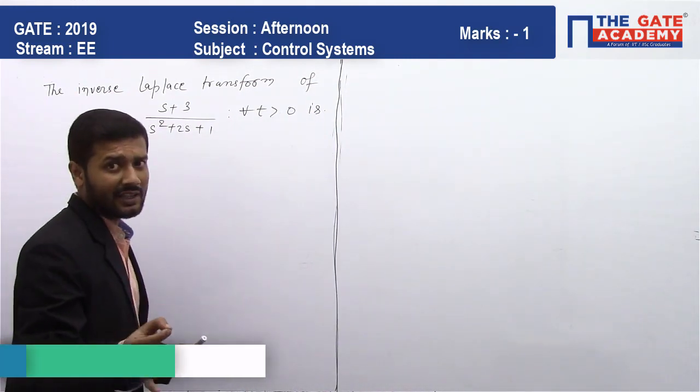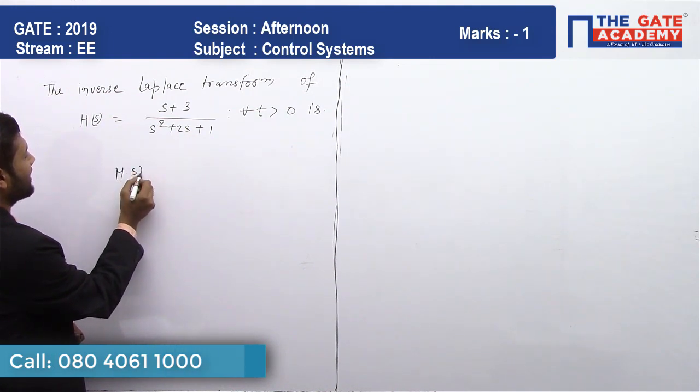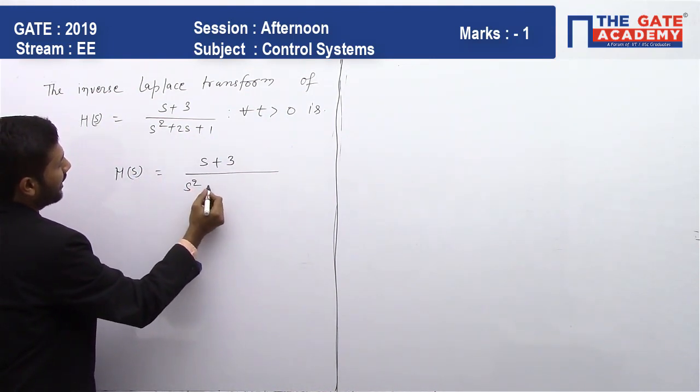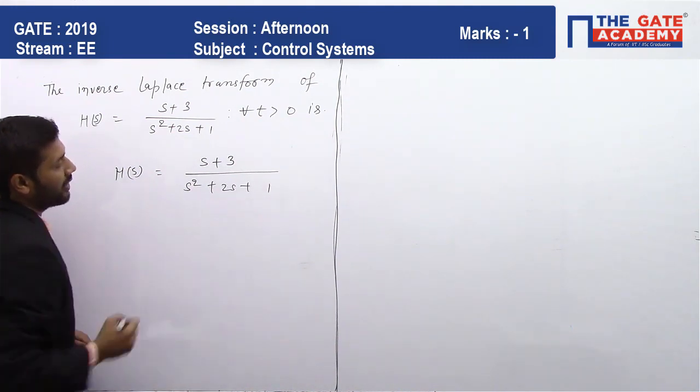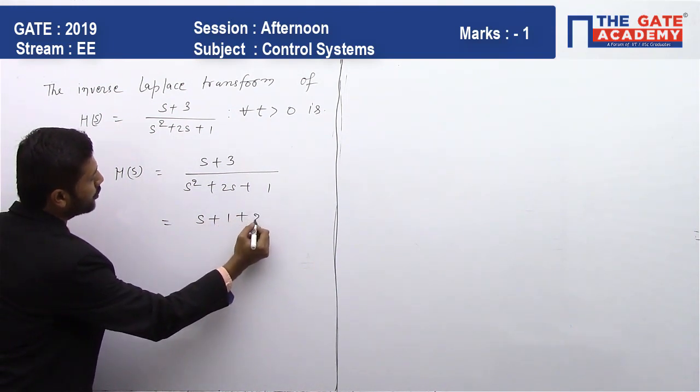We have to find the inverse Laplace transform. Now this H(s) is given as H(s) = (s+3)/(s²+2s+1). So we can write this transfer function as (s+1+2)/(s+1)².